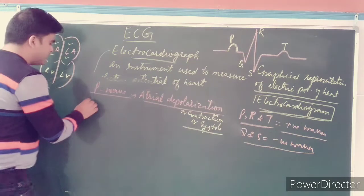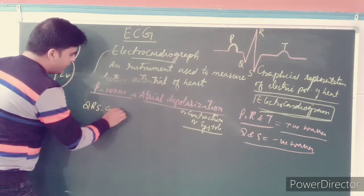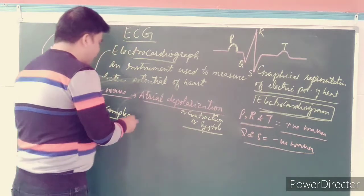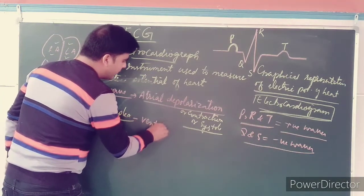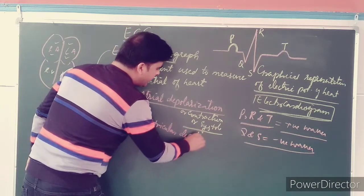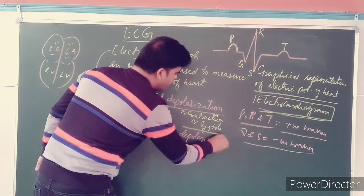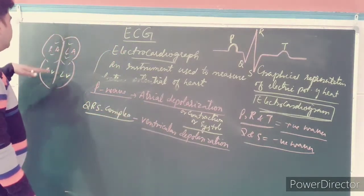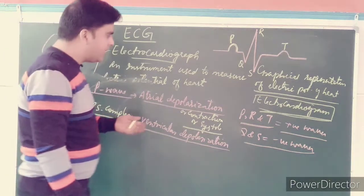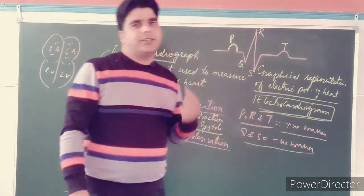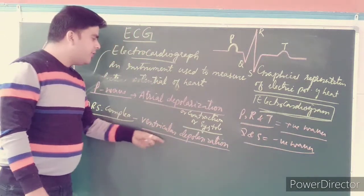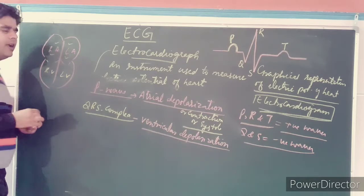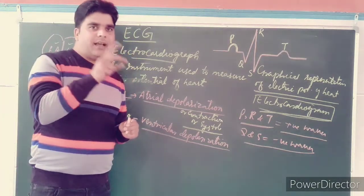After the P wave, what you see is the QRS complex. The QRS complex shows ventricular depolarization, meaning when the ventricles contract. Depolarization means contraction or systole, so ventricular depolarization means ventricular contraction and ventricular systole. Remember: first the atria contract, then the atria relax, and after that the ventricles contract.